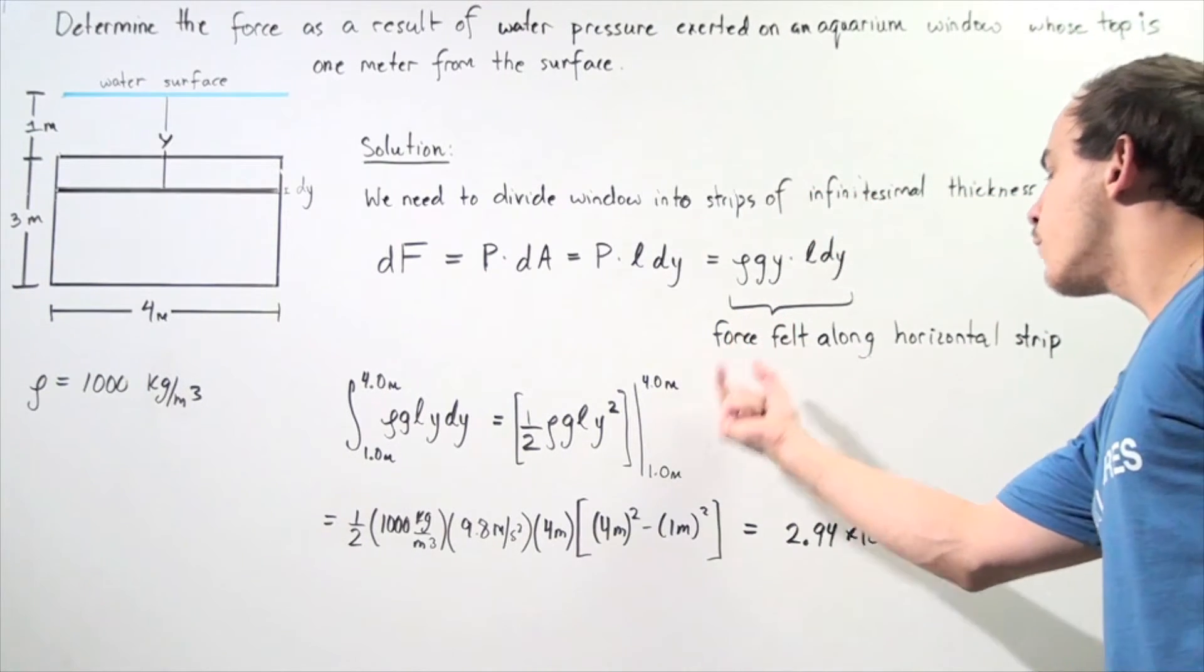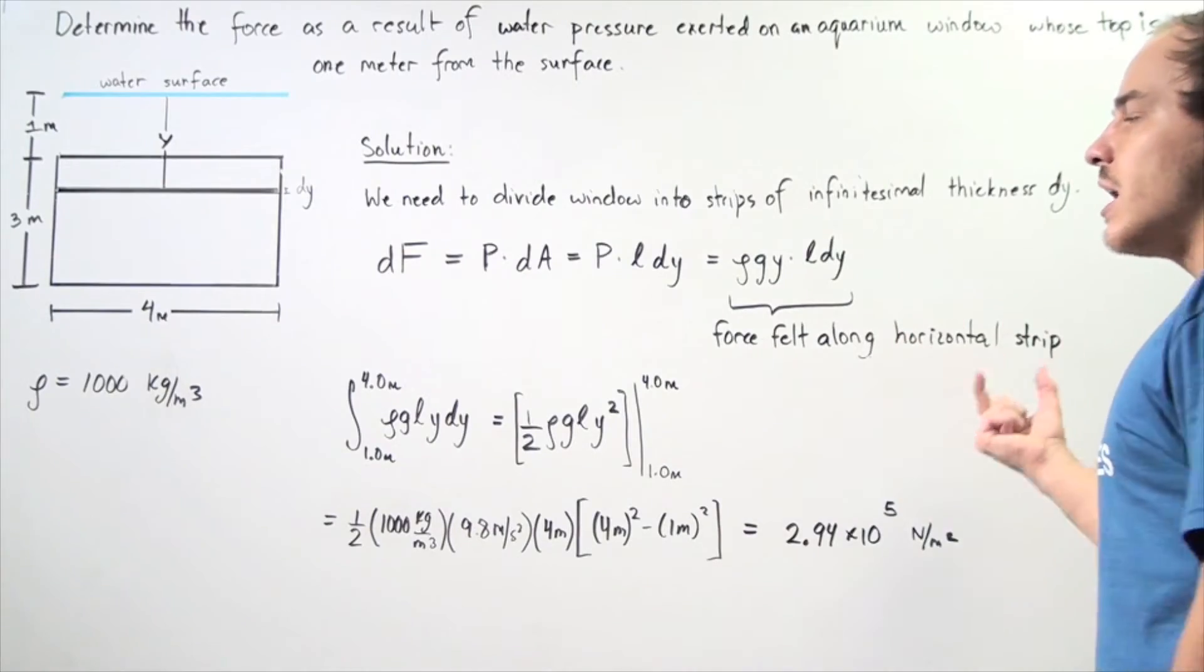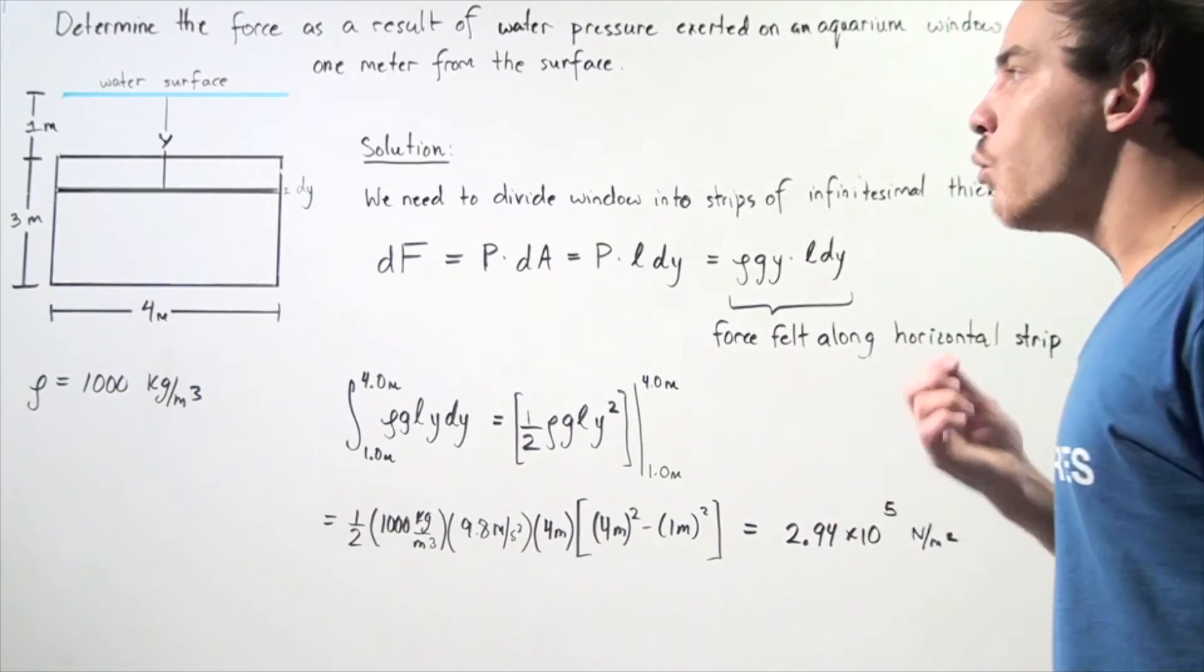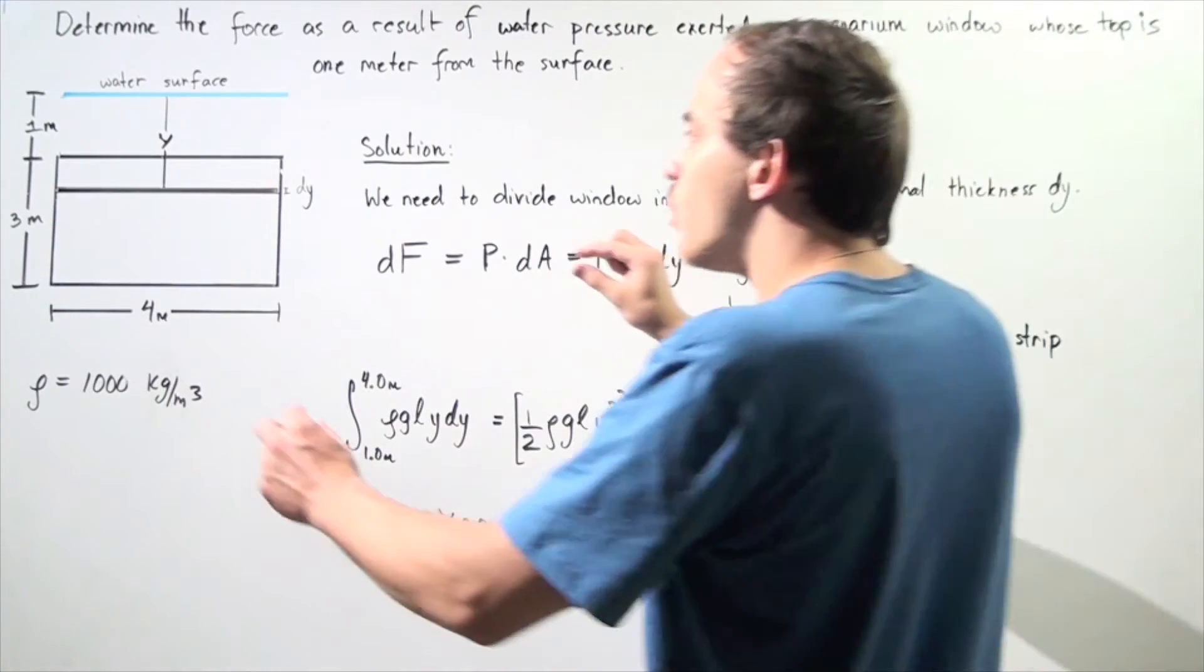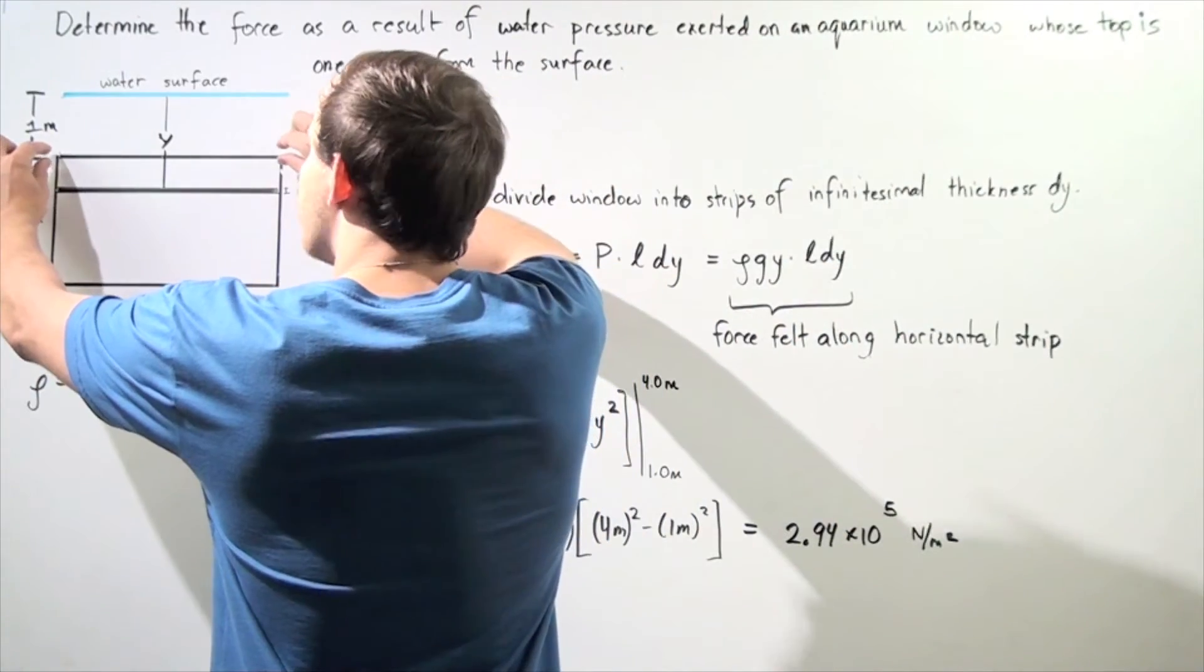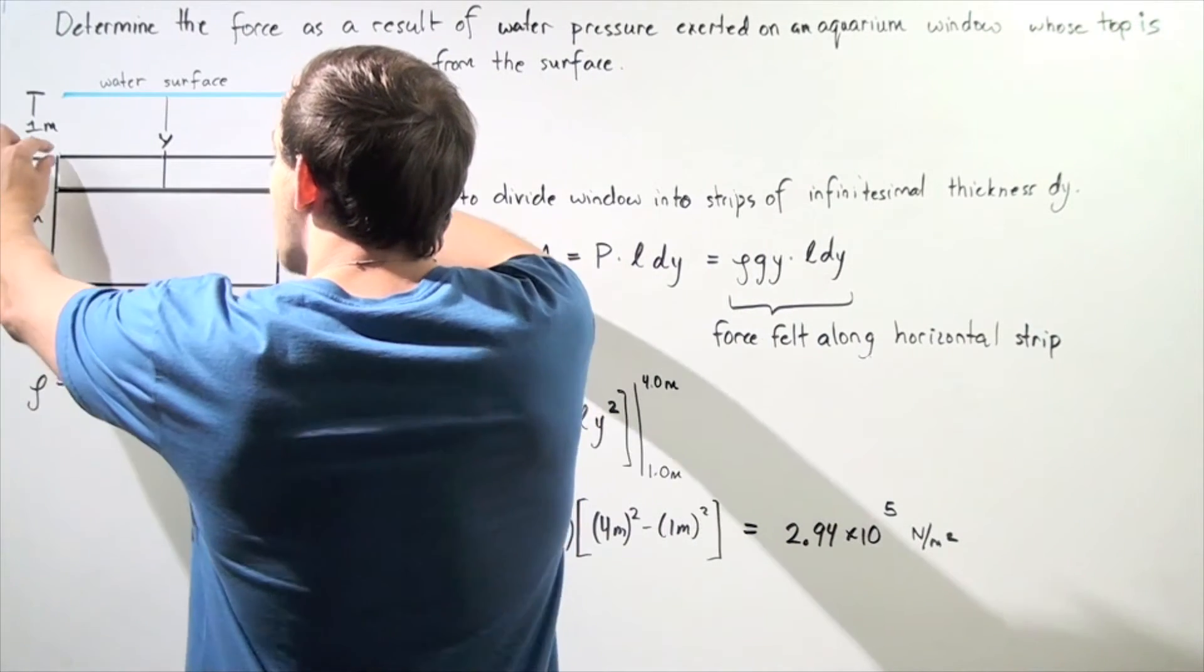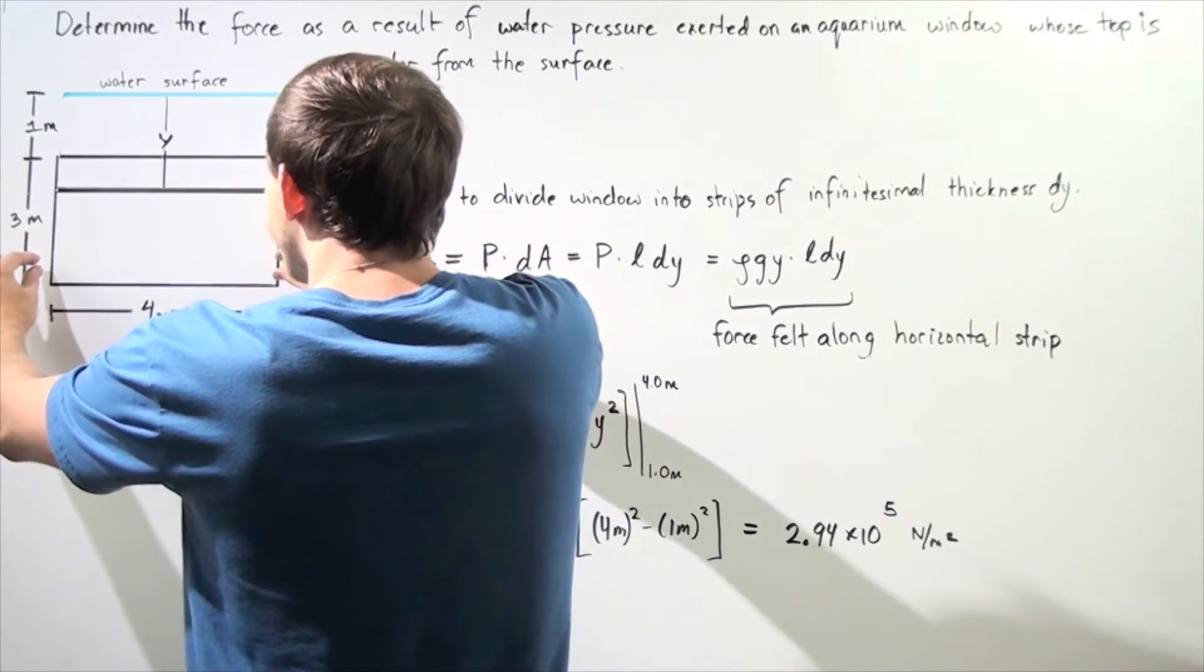So this is the force felt along the horizontal strip. So now what we want to do is we want to begin with the strip on this portion and go all the way down and find all the forces along all the strips all the way down to the bottom.